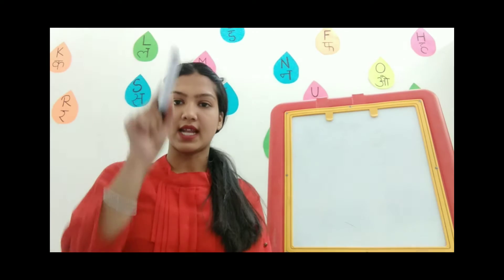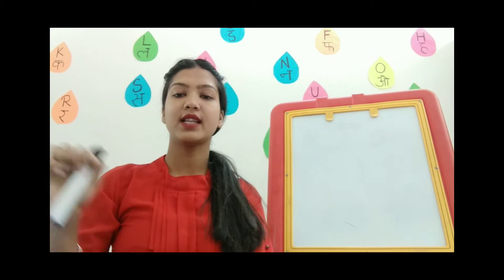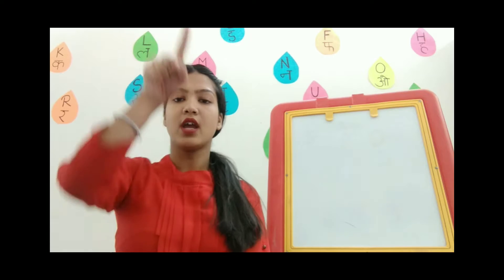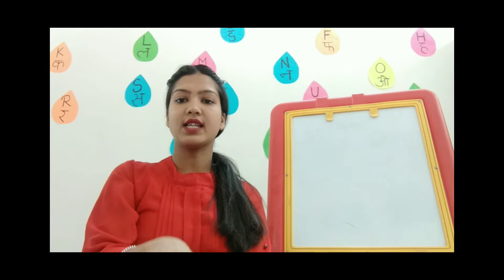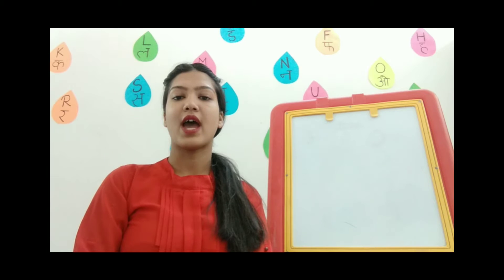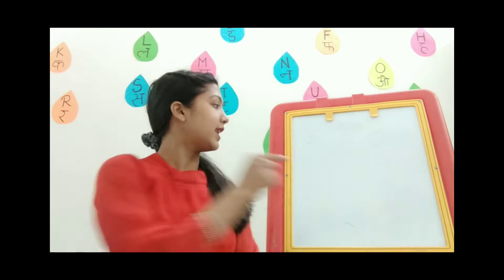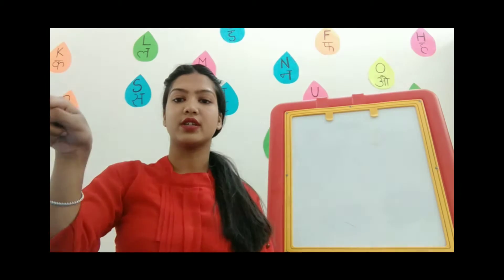First we have learned standing line, then sleeping line, then we will learn about slanting line. First we will learn it with the help of our hands and our fingers. Make a straight line — this is standing line. Draw with your hands: standing line. Now sleeping line, like this, with your hands and fingers. Sleeping line.